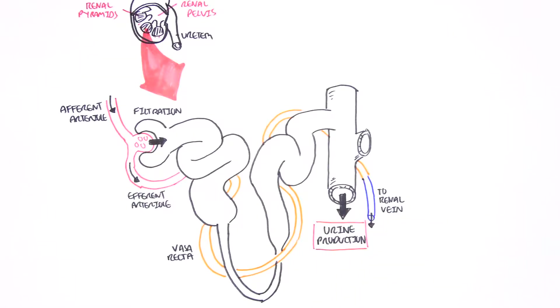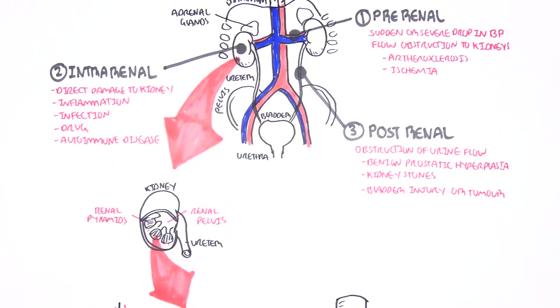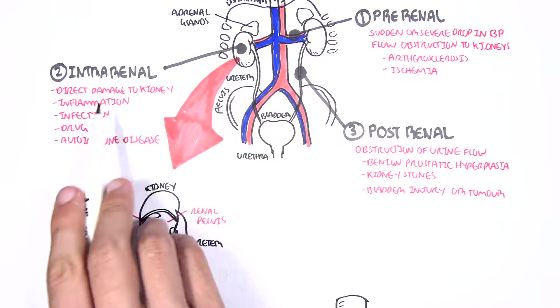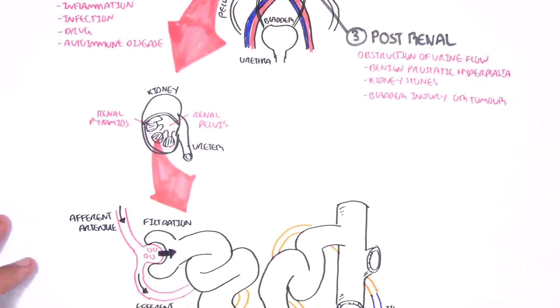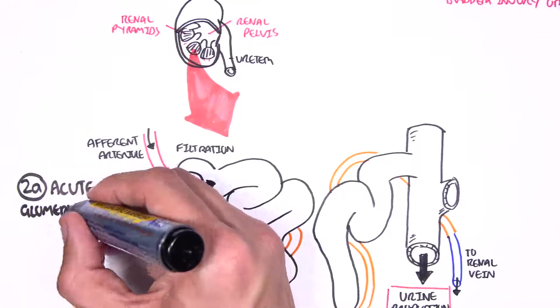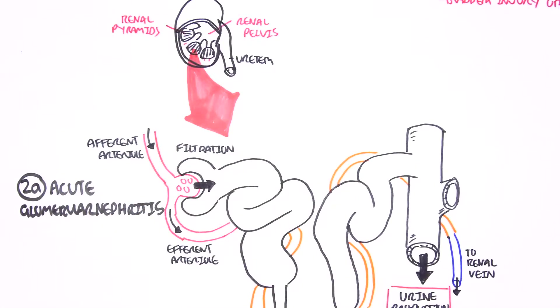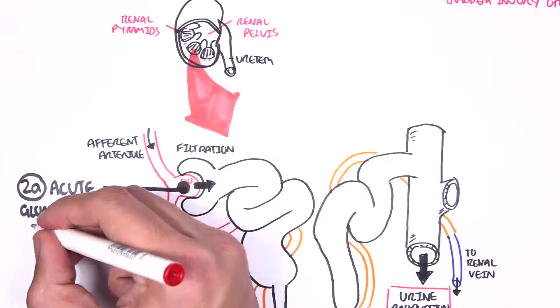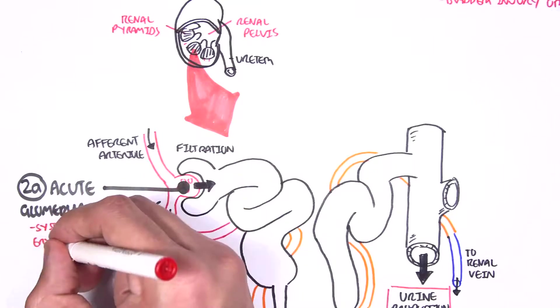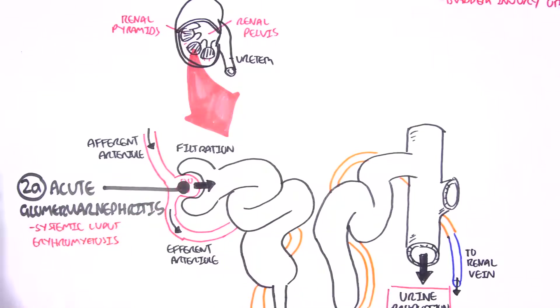Let's recap the three main causes of acute renal failure: we have pre-renal, intra-renal, and post-renal. We will mainly focus on intra-renal. In intra-renal causes there are actually four main types. We can have acute glomerulonephritis, which is literally inflammation of the glomerulus. One of the main causes of acute glomerulonephritis is an autoimmune condition known as systemic lupus erythematosus.